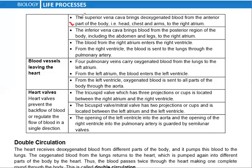The superior vena cava carries deoxygenated blood from the upper part, and the inferior vena cava from the lower part, both collected into the right side of the heart. The four pulmonary veins carry oxygenated blood from the lungs to the left atrium.